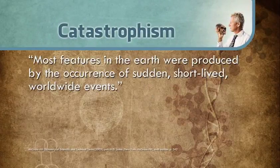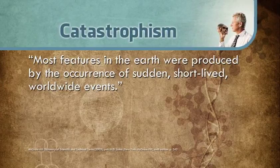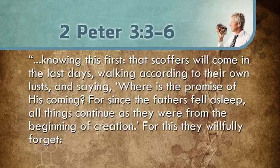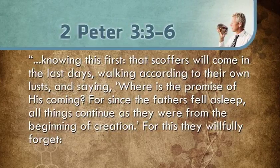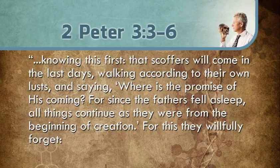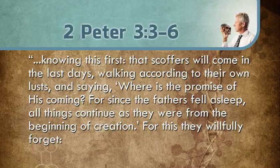Catastrophic events can speed processes up and create a superficial appearance of age. Catastrophism, according to the McGraw-Hill Dictionary of Scientific and Technical Terms, is the idea that most features in the earth were produced by the occurrence of sudden, short-lived, worldwide events. This approach at interpreting geologic phenomena seems much more reasonable, and this idea is the contention of the creation model. 2 Peter 3:3-6 says: 'Knowing this first, that scoffers will come in the last days, walking according to their own lusts, and saying, Where is the promise of His coming? For since the fathers fell asleep, all things continue as they were from the beginning of creation.'